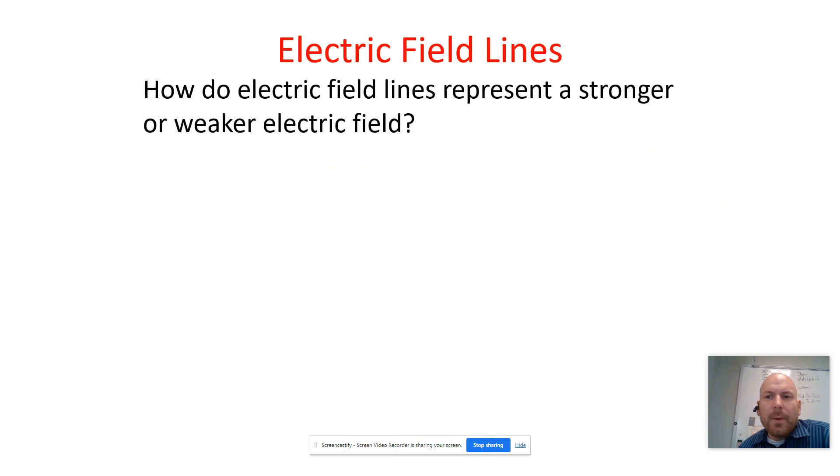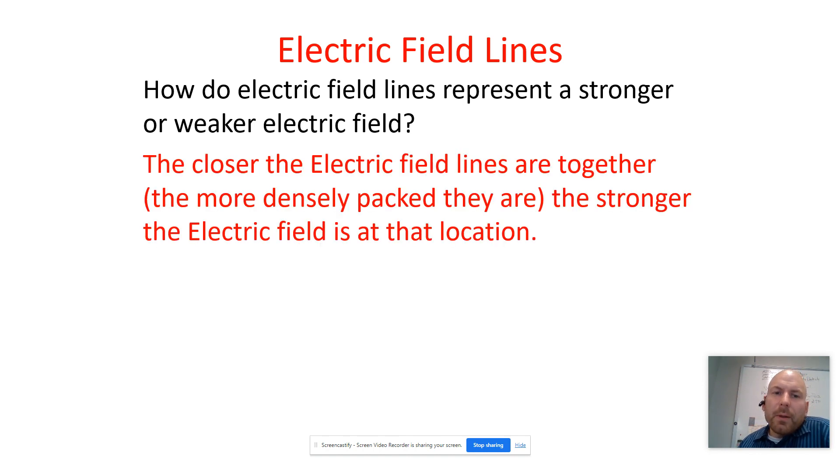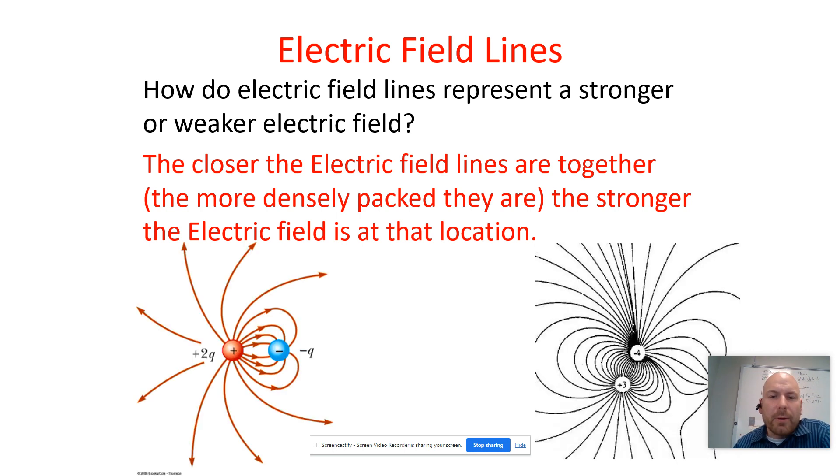So what information can we glean from electric field lines? Well, the closer electric field lines are together, the more densely packed they are, the stronger the electric field is at that location. So here we can see right here, we have a strong electric field.